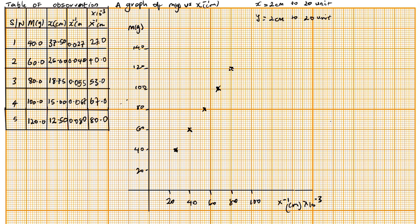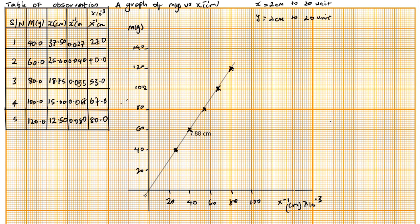The next step is to draw a line of best fit. You're going to draw your line so that the majority of your points lie along the line or are cut through by it. We now have our line of best fit drawn.